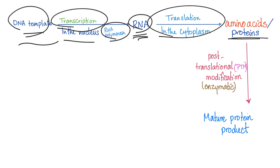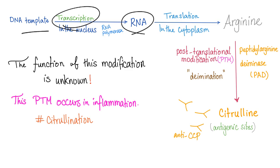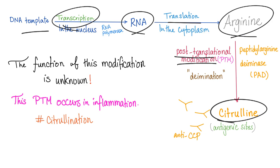These proteins are not yet mature — we need some modification to make them mature protein products. We call this process post-translational modification, which is a group of enzymatic reactions. So to be specific: DNA template → transcription → RNA → translation → arginine → post-translational modification → citrulline.